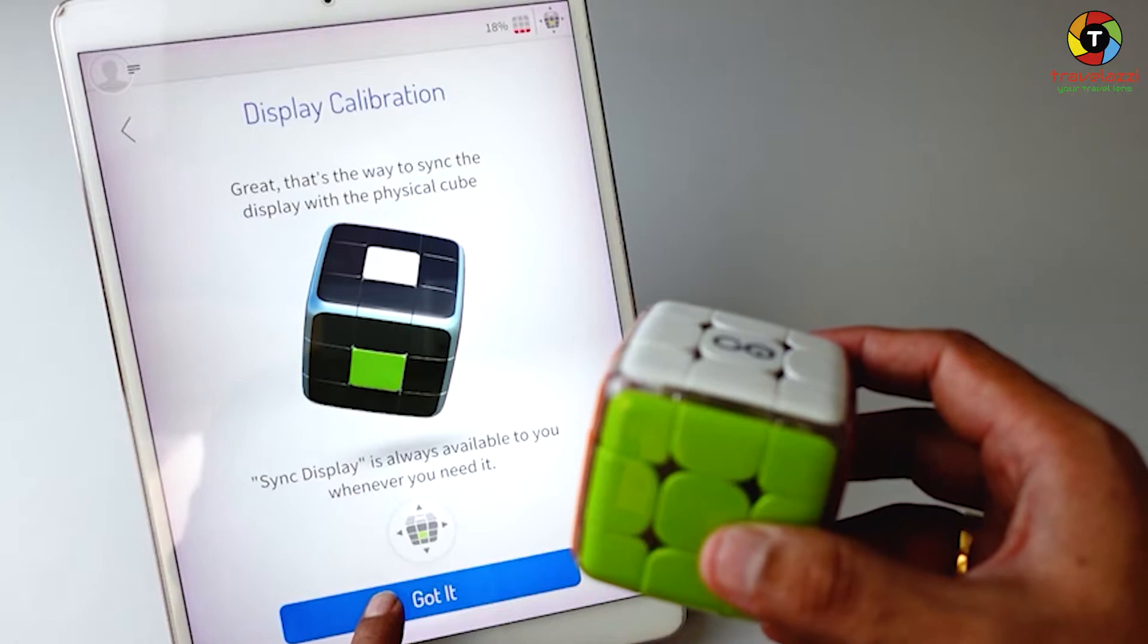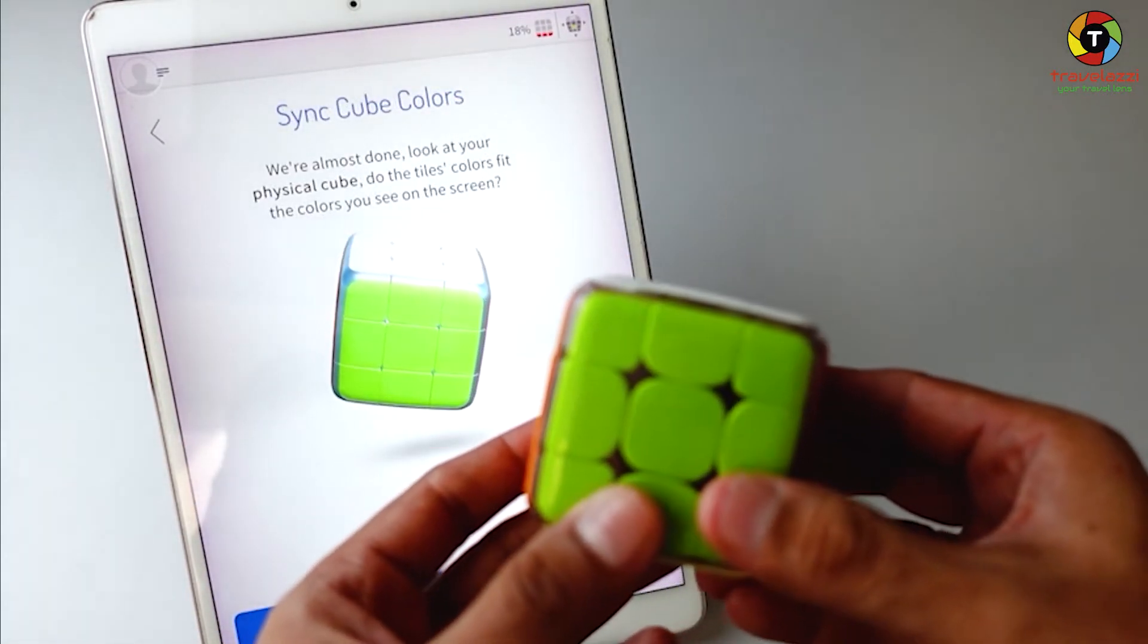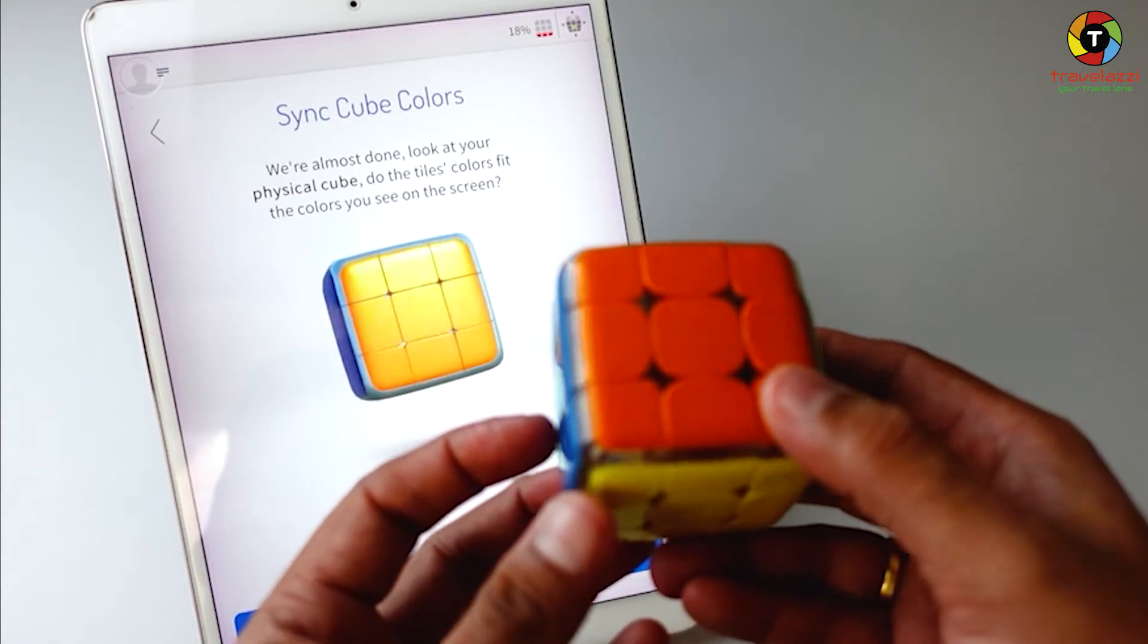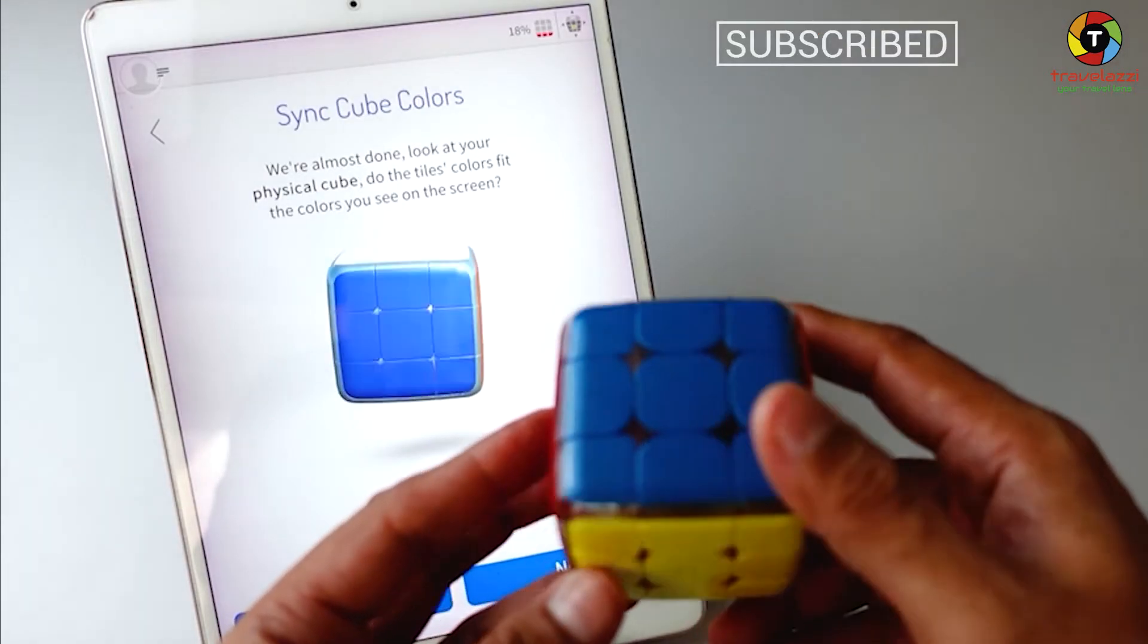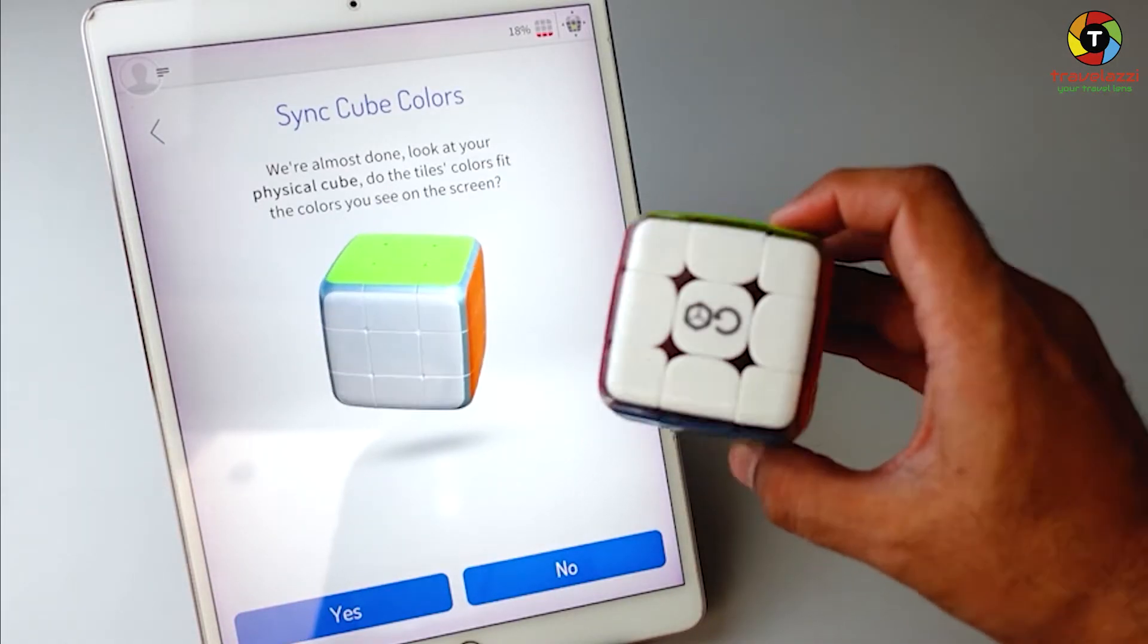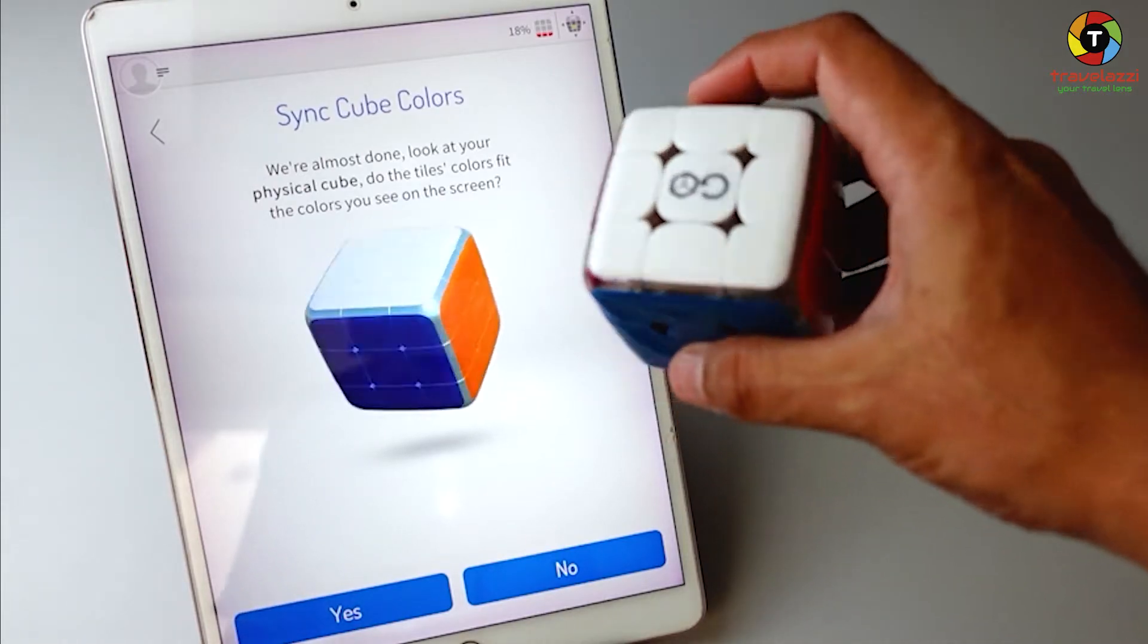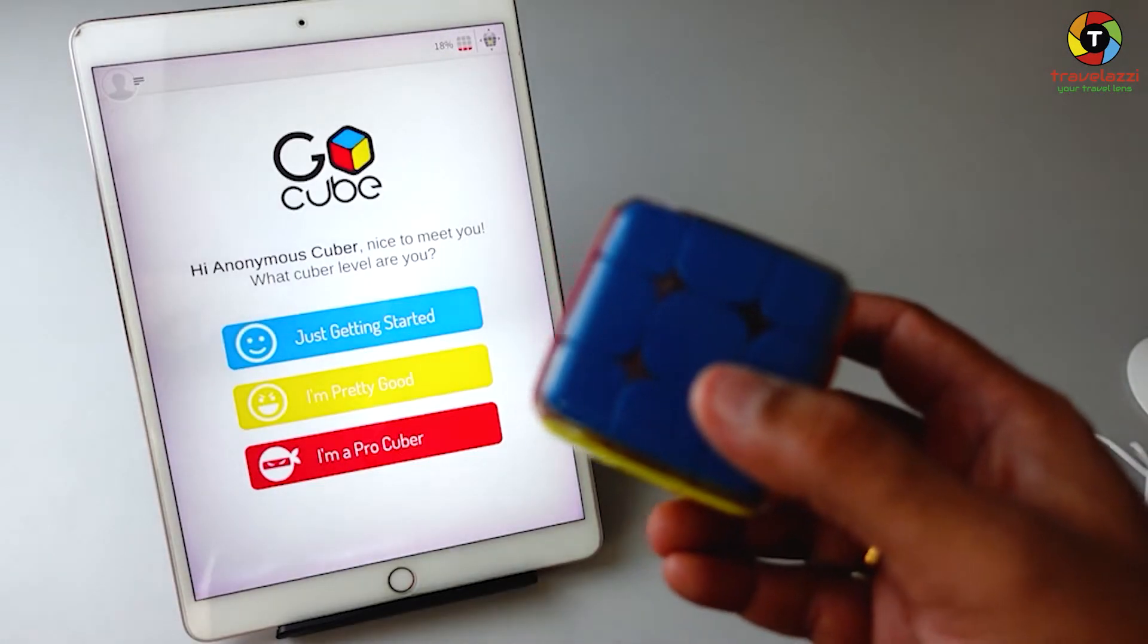Let's click on the content button. Sync cube colors. We are almost done. Look at your physical cube, do the tiles color fit the colors on your screen? Oh yes they do, whichever way I am moving. I just love doing this, I'm just enjoying moving the cube around. You see how cool it is to see the thing moving on the screen. Yes, it's working perfectly for me.